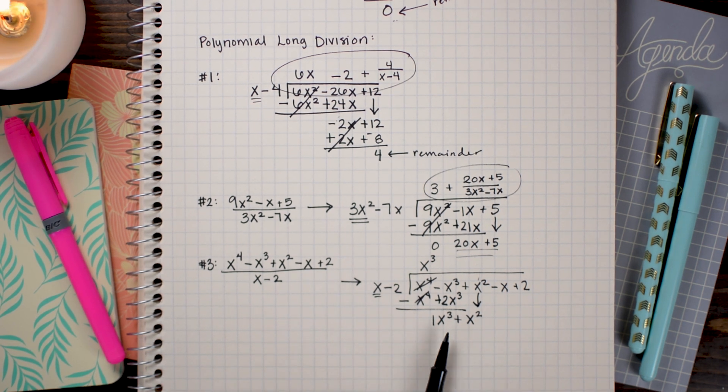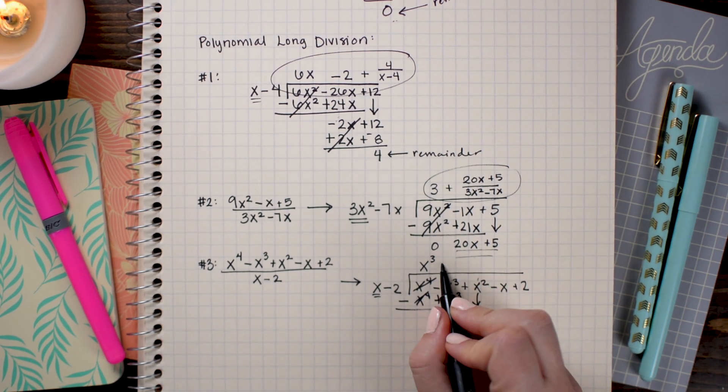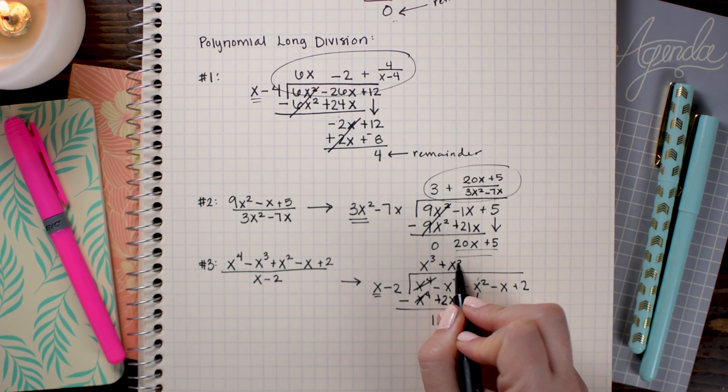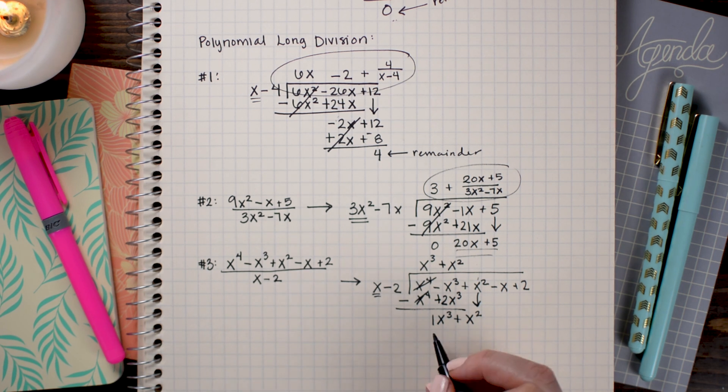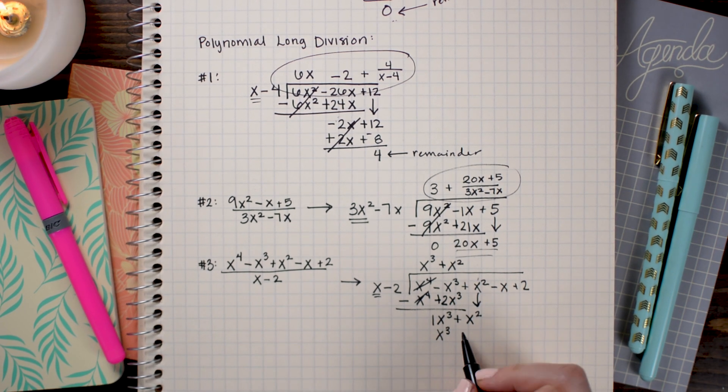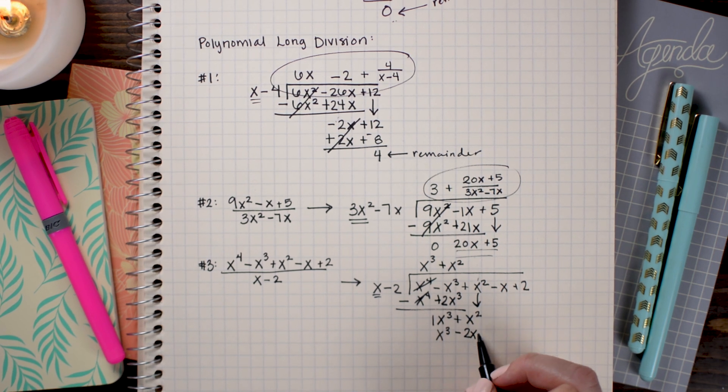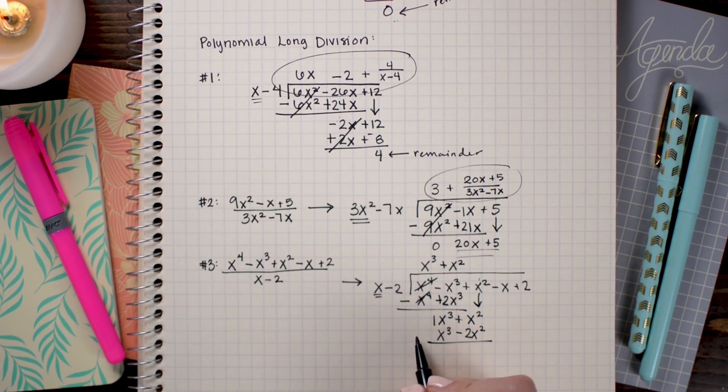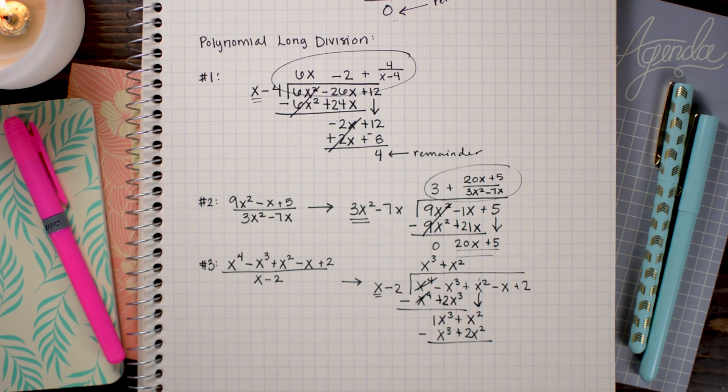Here I've brought down the next term which is x². And I'm going to repeat this process all over again. So x times what would give me x³? That is x². So I'm going to put a positive x² up here. x² times x is x³. And x² times -2 is -2x². Again, I flip the signs and add.